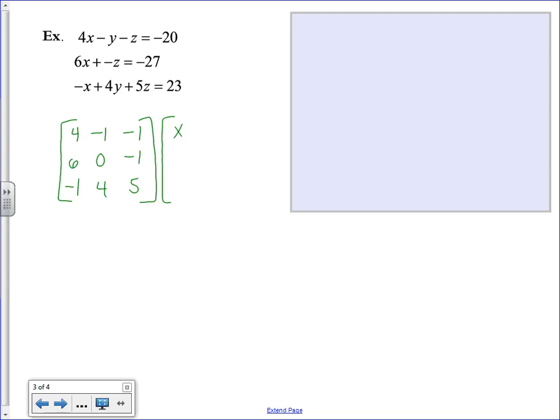That is getting multiplied by an X, Y, Z matrix. And it equals the constants, negative 20, negative 27, and 23.